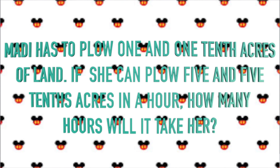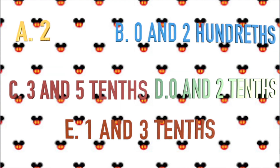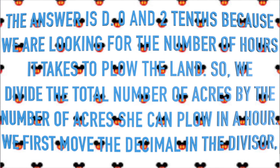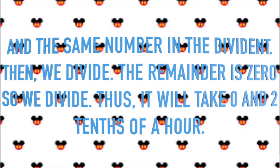Maddie needs to plow one and one-tenth acres of land. If she can plow five and five-tenths acres in an hour, how many hours will it take? A. Two. B. Zero and two-hundredths. C. Three and five-tenths. D. Zero and two-tenths. Or E. One and three-tenths. The answer is D, zero and two-tenths. Because we are looking for the number of hours it will take to plow the land, we divide the total number of acres by the amount of acres she can plow in an hour. We first move the decimal in the divisor and the same number in the dividend. Then we do the division. The remainder is not zero, so we continue to divide. The remainder is zero, so we are done. Thus, it will take zero and two-tenths hours.